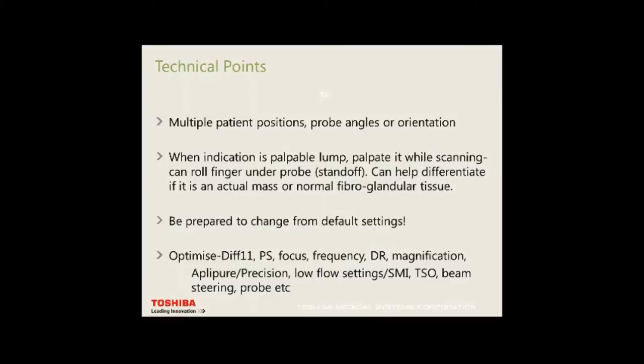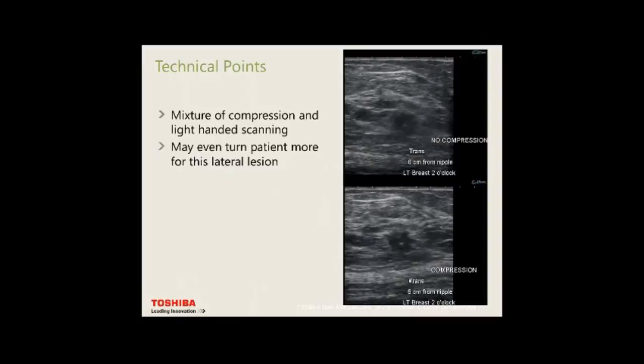Toshiba machines work well with DIF2 on the most modern machines, or PS for cystic lesions. Ensure your focus is correct and be prepared to go to a lower frequency if needed. You may decrease dynamic range for fatty breasts, or use TSO. I like ApliPure set at about 5 and Precision at about 6 — ApliPure is your compounding, Precision is noise reduction and edge sharpening. Use low flow settings of 2 to 5 cm/s and don't forget SMI.